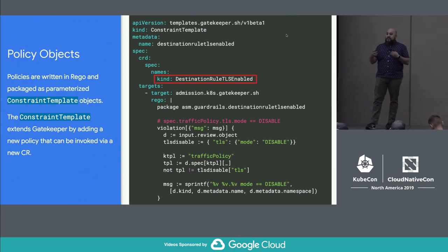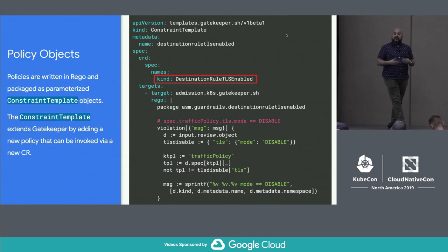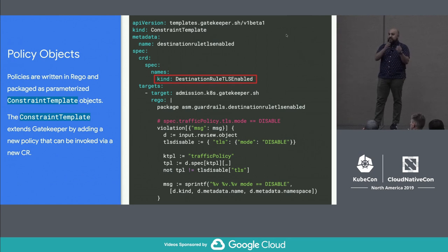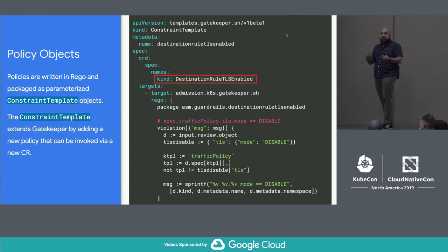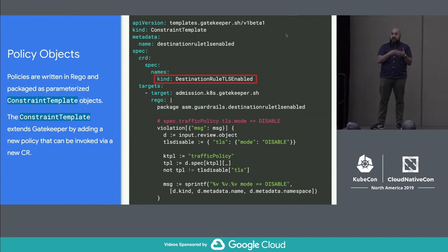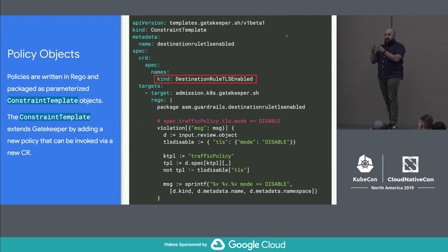The reason you separate the policy from the enforcement of that policy is that depending on the type of policy, it may be parameterized. For example, you may want three specific labels on every incoming deployment object in a particular namespace. Depending on the namespace, you may want to change what that looks like. So you may have a single constraint template — a single set of rules — but then in each namespace you care about, you have an individual constraint object that lets you scope it to specific parameters.